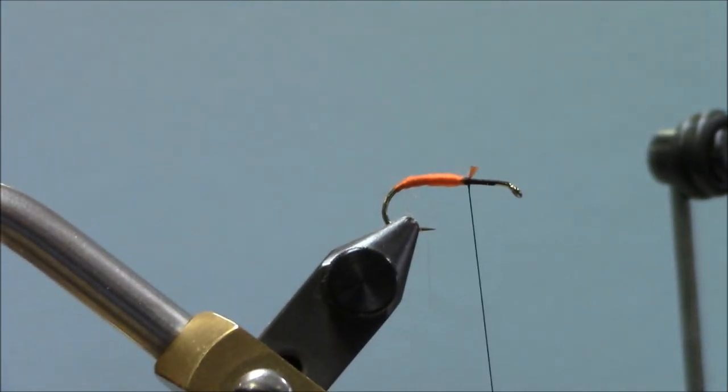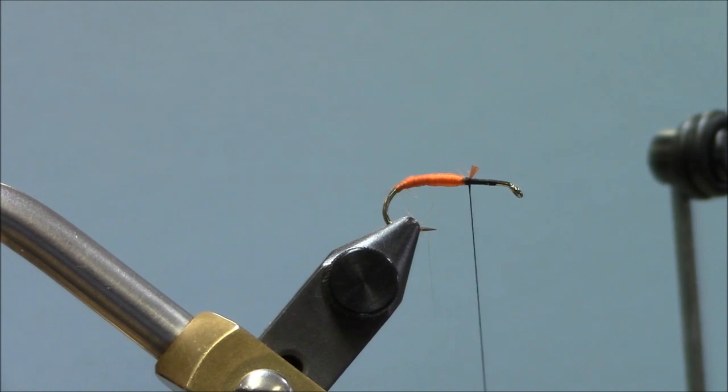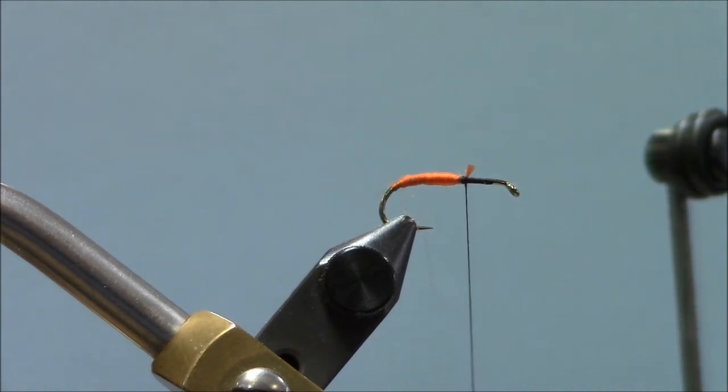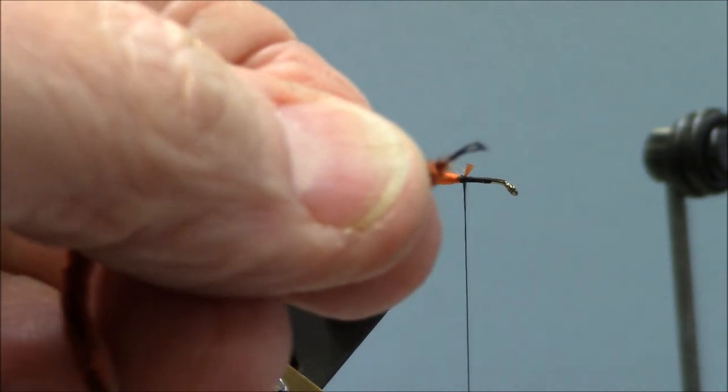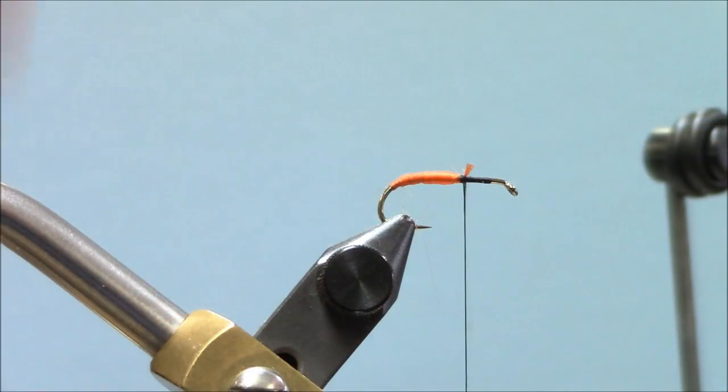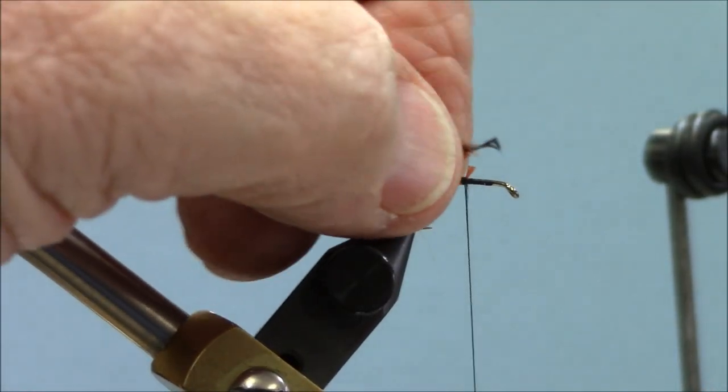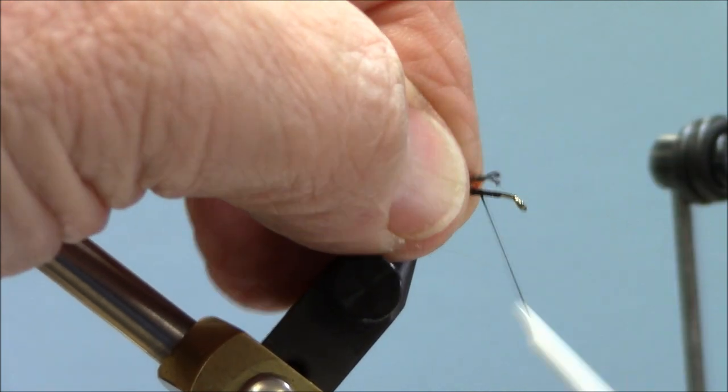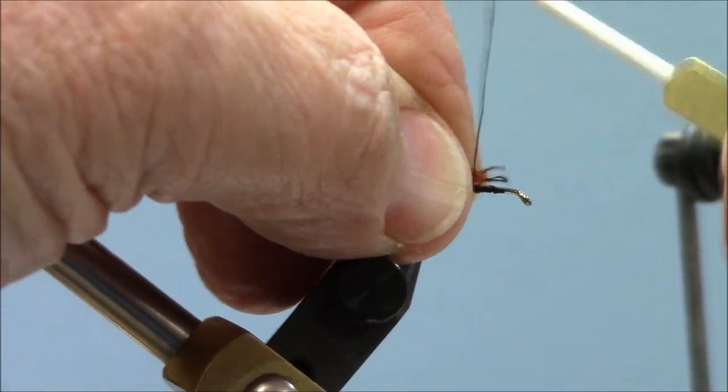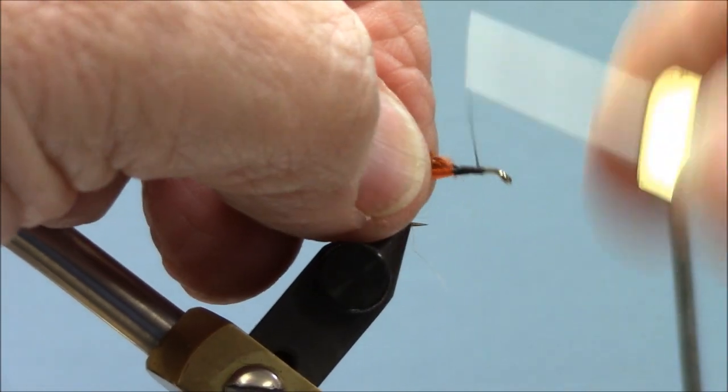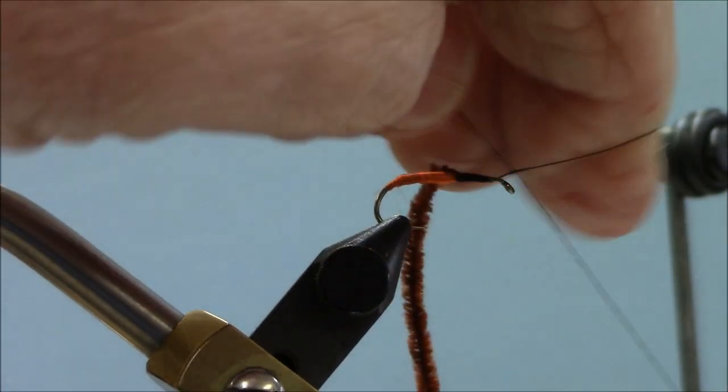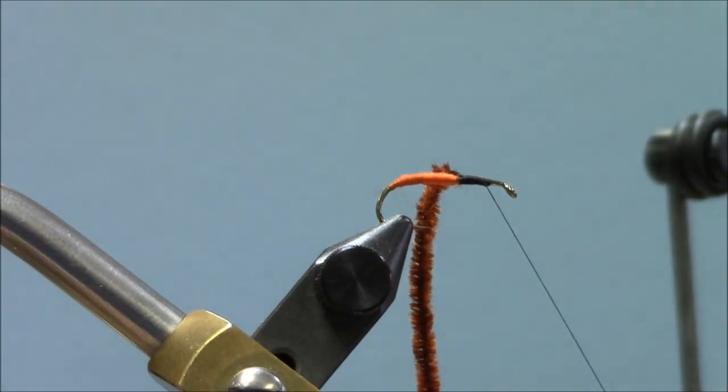Now you should have a piece of this rust brown mini chenille. This chenille comes in a variety of sizes—this is not as small as it comes, but it's pretty close. They have a micro chenille that's even smaller. Remember, we're going to strip that thread off the end, and then I'm going to tie that end in.